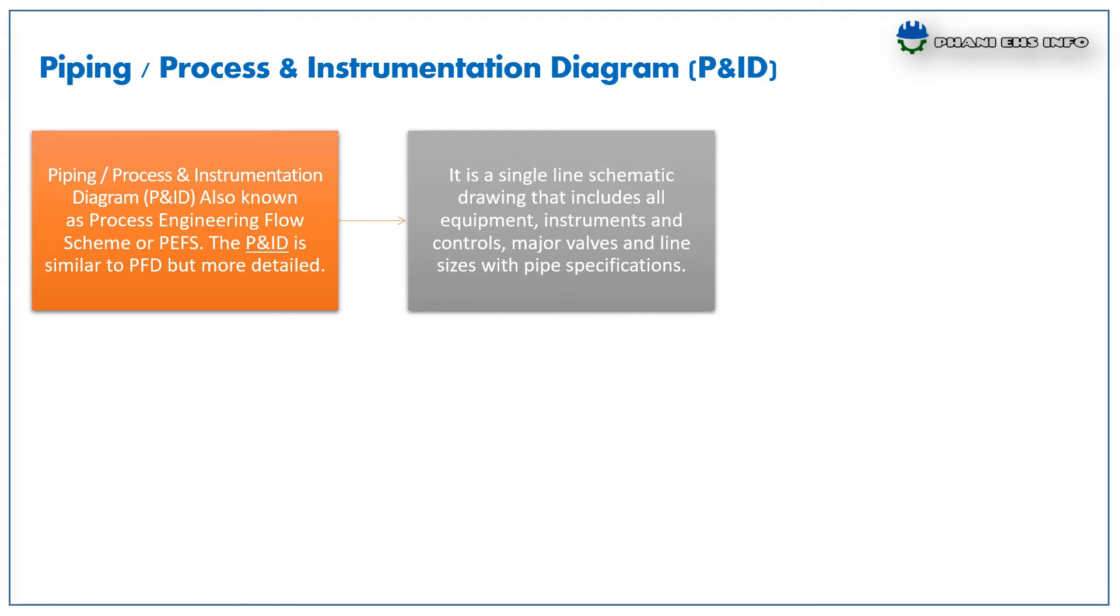It is a single line schematic drawing that includes all equipments, instruments and controls, major valves and line sizes with pipe specifications. It is the first important document that controls the activity of all related engineering groups.